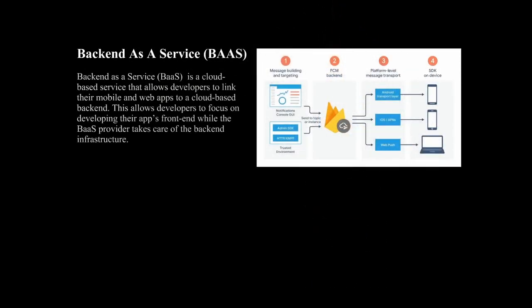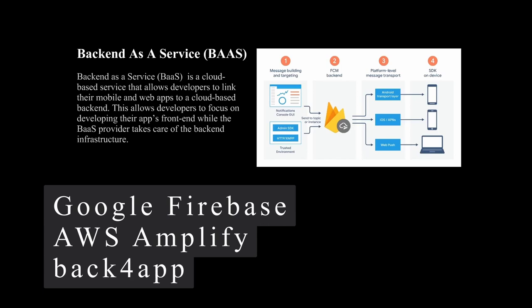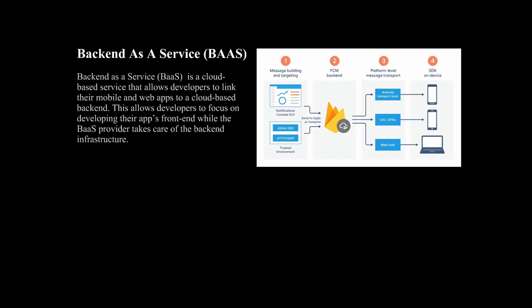Another related service is Backend-as-a-Service, which is a cloud-based service that allows developers to link their mobile and web apps to a cloud-based backend. This allows developers to focus on developing their app's front-end while the Backend-as-a-Service provider takes care of the backend infrastructure. Examples include Google Firebase, Amazon Web Services Amplify, and Back4App. Function-as-a-Service and Backend-as-a-Service are two more services that are becoming more popular in the cloud computing world, and they offer different advantages and use cases.